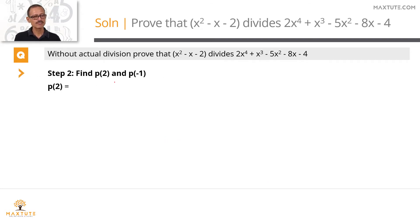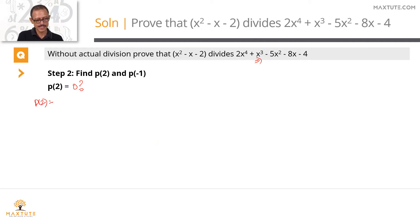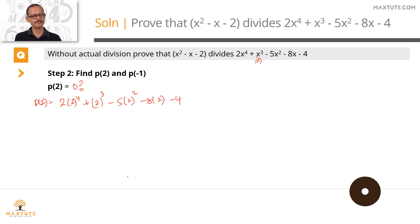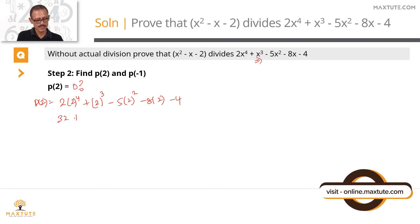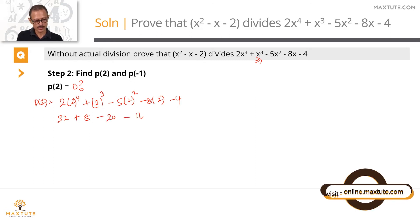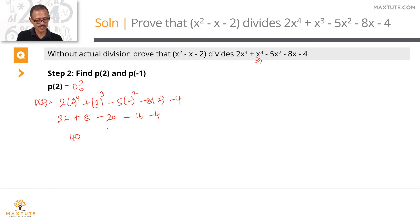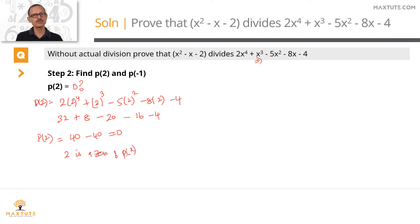Step 2: we'll check whether 2 and minus 1 are also zeros of the polynomial. If 2 is a zero of p of x, then p of 2 will equal 0. Substituting x equals 2: p of 2 equals 2 times 2 to the power 4 plus 2 cubed minus 5 times 2 squared minus 8 times 2 minus 4. That gives 2 times 16 plus 8 minus 20 minus 16 minus 4, which equals 32 plus 8 minus 20 minus 16 minus 4. Positive terms sum to 40, negative terms sum to 40. So p of 2 equals 0, confirming 2 is a zero of p of x.